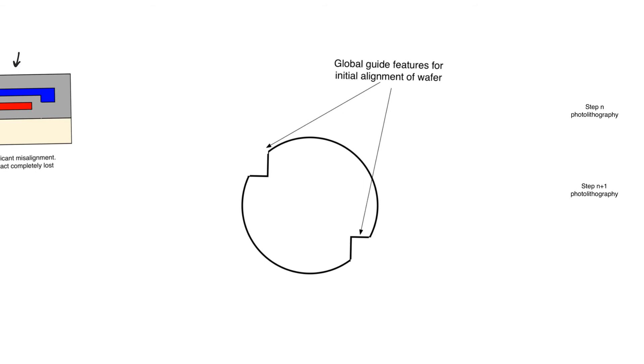So the first method of alignment that we can use can be used to globally align the wafer to the structure which we use for exposure, and this can usually be done in a very coarse fashion using guide structures that are created on the wafer.